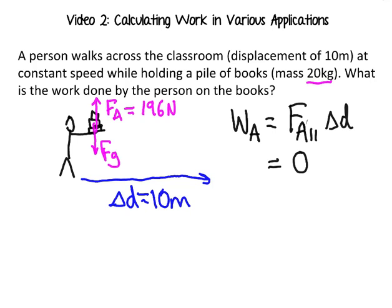So this value is actually zero, and zero times 10 is of course zero. This feels a little counterintuitive, but the work that you do on the books to walk across the classroom is actually zero joules. It might feel confusing because you might feel tired after carrying the books — but in the physics definition of work, you actually didn't do any work. You didn't add any new energy to the system by holding the books up like that.